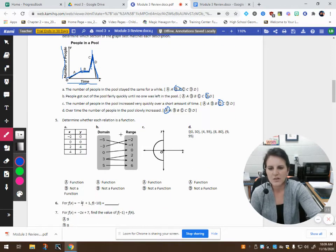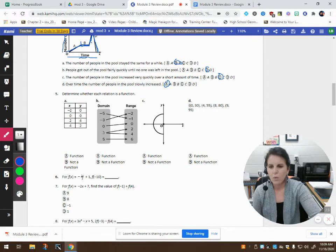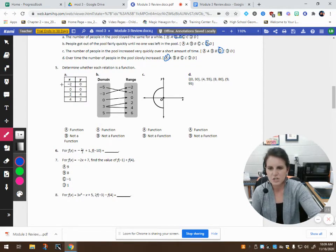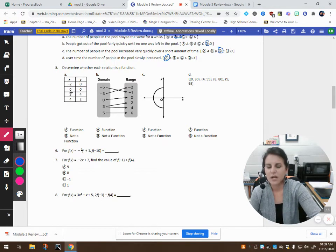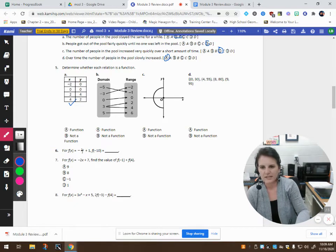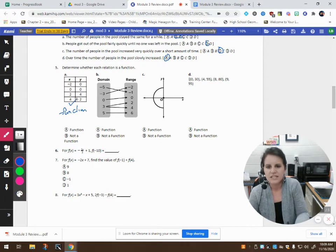Determine whether each relation is a function or not. Well, we have to think about our meaning of something being a function. Remember, if it's a function, it would pass the vertical line test. So, thinking about this, this would definitely pass the vertical line test because no x value is repeated more than once. So, this is a function. Looking at this one, this is not a function. It would fail the vertical line test right here because 3 gets paired with 2 and 3 gets paired with 5. So, because of that, it is not a function.